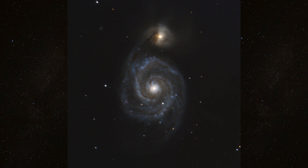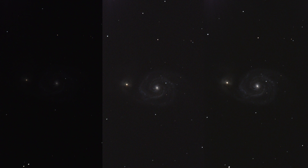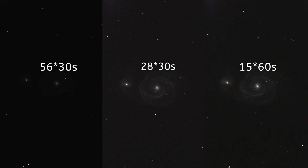Now let's talk about the exposure time of the single images. I actually experimented a little bit with the camera settings, and that's why there are three different groups of pictures. First I took 56 pictures with an exposure time of 30 seconds, then another 28 pictures with the same exposure time but a higher gain setting. The third group has an exposure time of 60 seconds, and I made a total of 15 pictures with these settings.